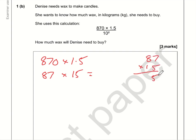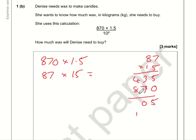Using the column method: 5 times 7 is 35, carry 3; 5 times 8 is 40 plus 3 is 43. Put in a zero because this is the 1 of 10; 1 times 7 is 7; 1 times 8 is 8. So: 5, 10 carry the 1; 8 plus 4 is 12 plus 1 is 13. So that is 1305.